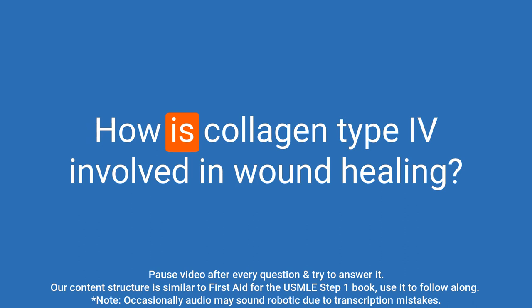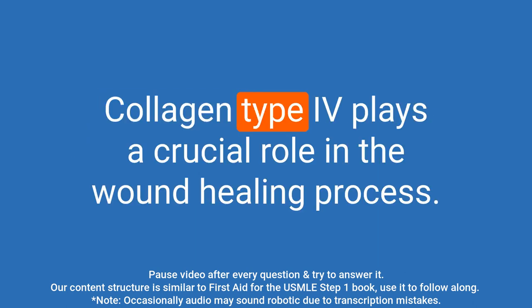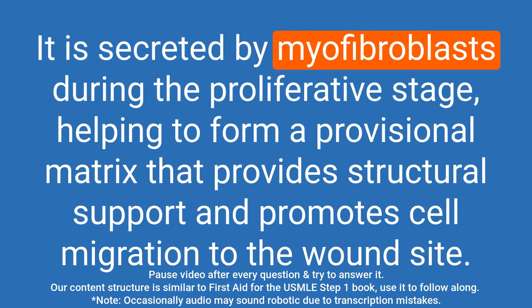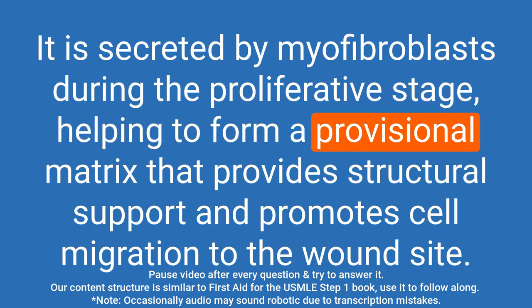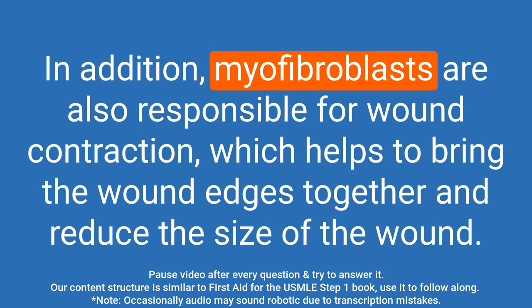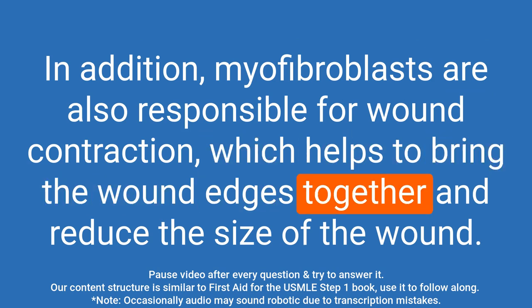Question: How is collagen type IV involved in wound healing? Answer: Collagen type IV plays a crucial role in the wound healing process. It is secreted by myofibroblasts during the proliferative stage, helping to form a provisional matrix that provides structural support and promotes cell migration to the wound site. Myofibroblasts are also responsible for wound contraction, which helps bring the wound edges together and reduce the size of the wound.